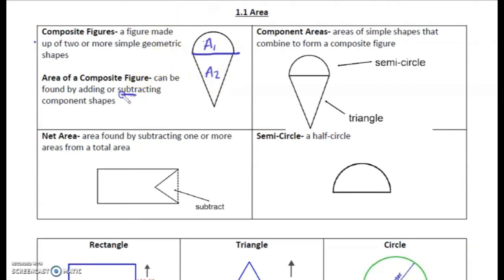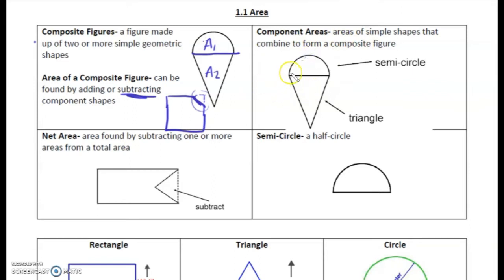The other way we can do it is by subtracting. A lot of times we see this with maybe a square and then we have a triangle taken out of it, so we can do the entire square minus the area of the triangle. Component areas are just areas of simple shapes that are combined to form the composite figure — for example, a semicircle and a triangle. These areas would be the two components.